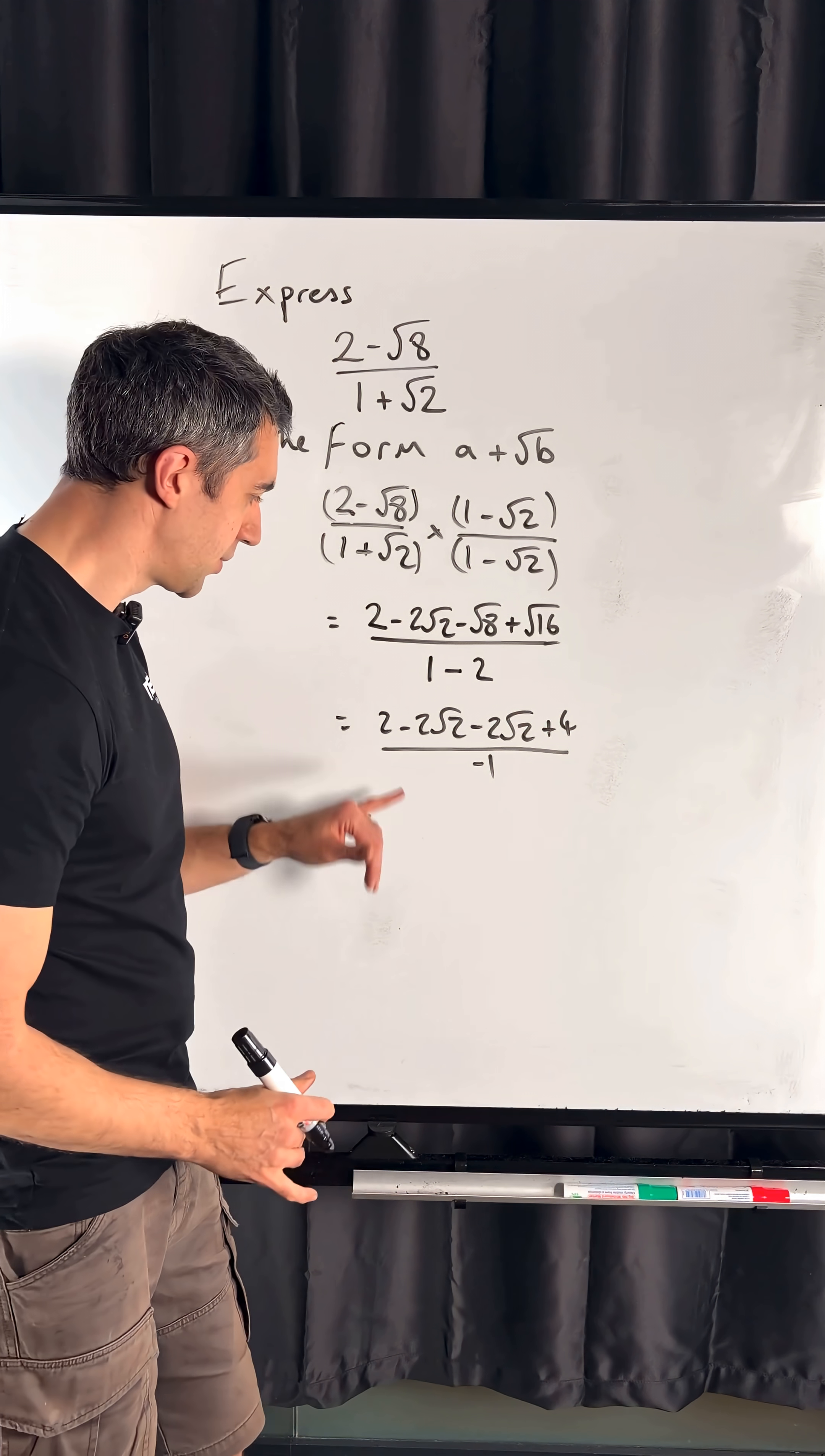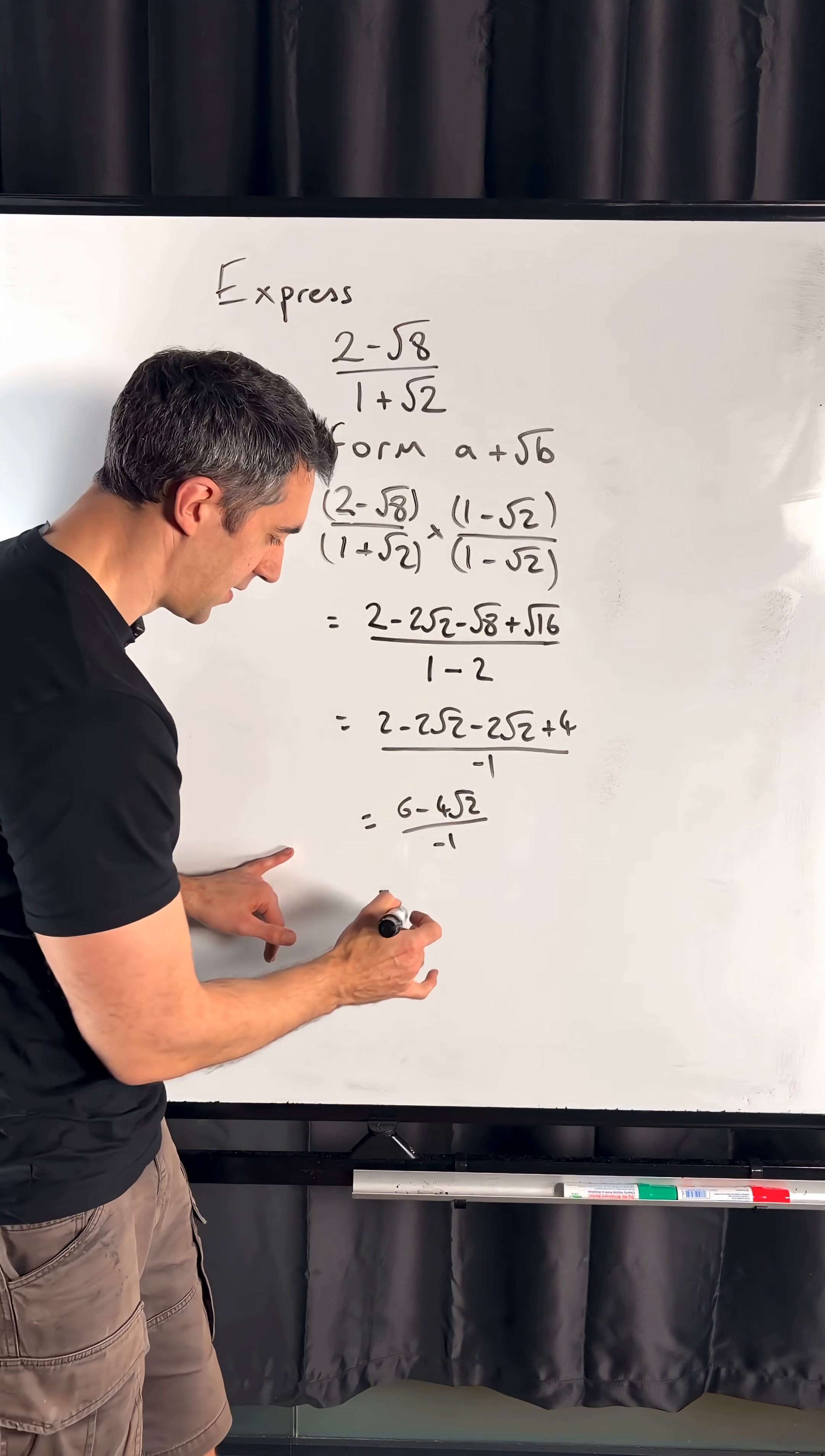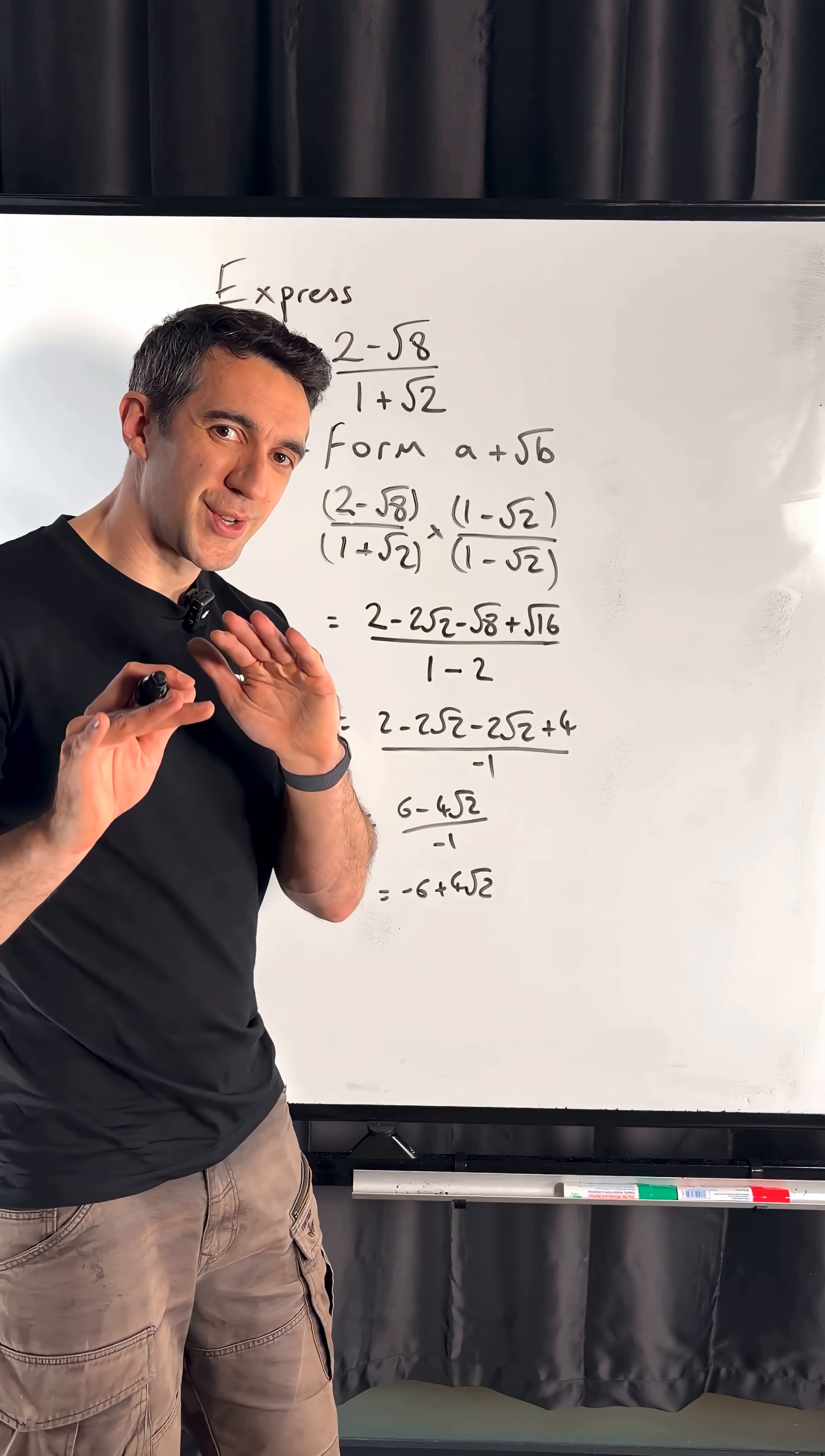So if we gather up as much as we can in our numerator, we've got 6 minus 4 root 2, still divided by minus 1. And then finally, I can do the minus 1, so you get minus 6 plus 4 root 2, which is not the correct answer.